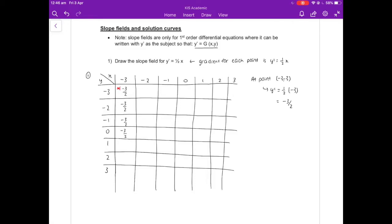And in fact, for every point going down the first column, they all have the same x value, and we know that the gradient is purely determined by the x value for this specific differential equation. Which means that all of them are going to be minus 3 over 2. Now let's look at when the x value is equal to minus 2. So at x equals negative 2, the gradient is half of that, which is minus 1.